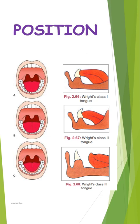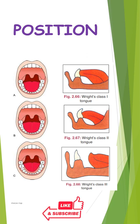In Class 1, the tongue lies on the floor of the mouth with the tip forwards and slightly below the incisal edges of the mandibular anterior teeth. In Class 2, the tongue is flattened and broadened but the tip is in normal position. In Class 3, the tongue is retracted and depressed into the floor of the mouth with the tip curled upwards, downwards, or assimilated into the body of the tongue.